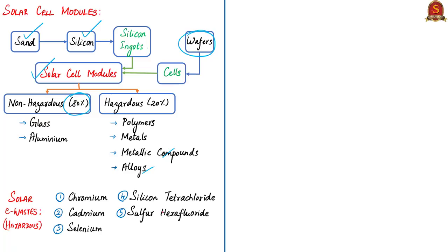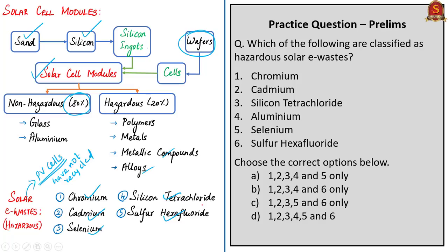Solar e-waste is photovoltaic cells that have reached their life cycle and haven't been recycled. They contain potentially hazardous materials including chromium, cadmium, selenium, silicon tetrachloride, and sulfur hexafluoride. With this, let us move on to the next article.